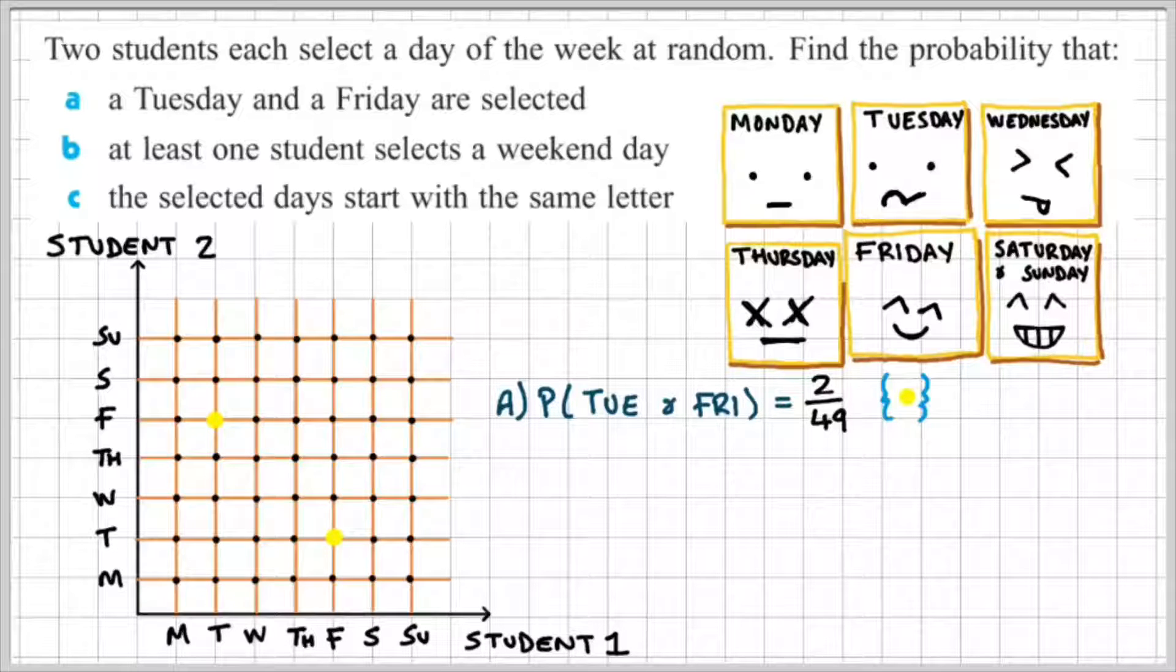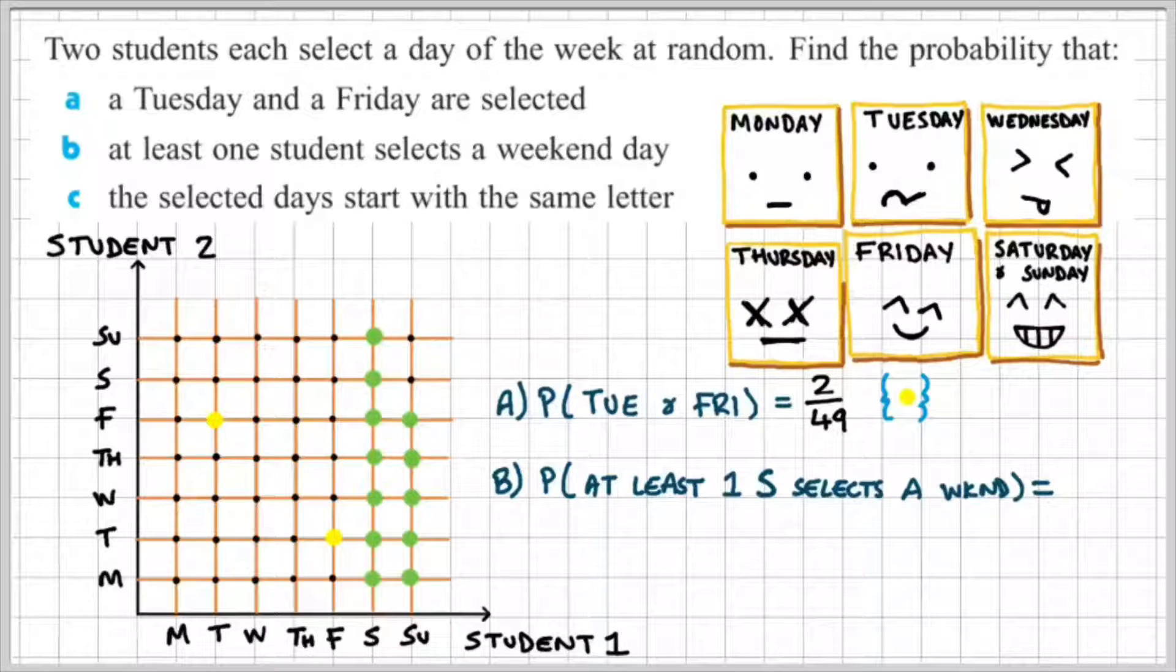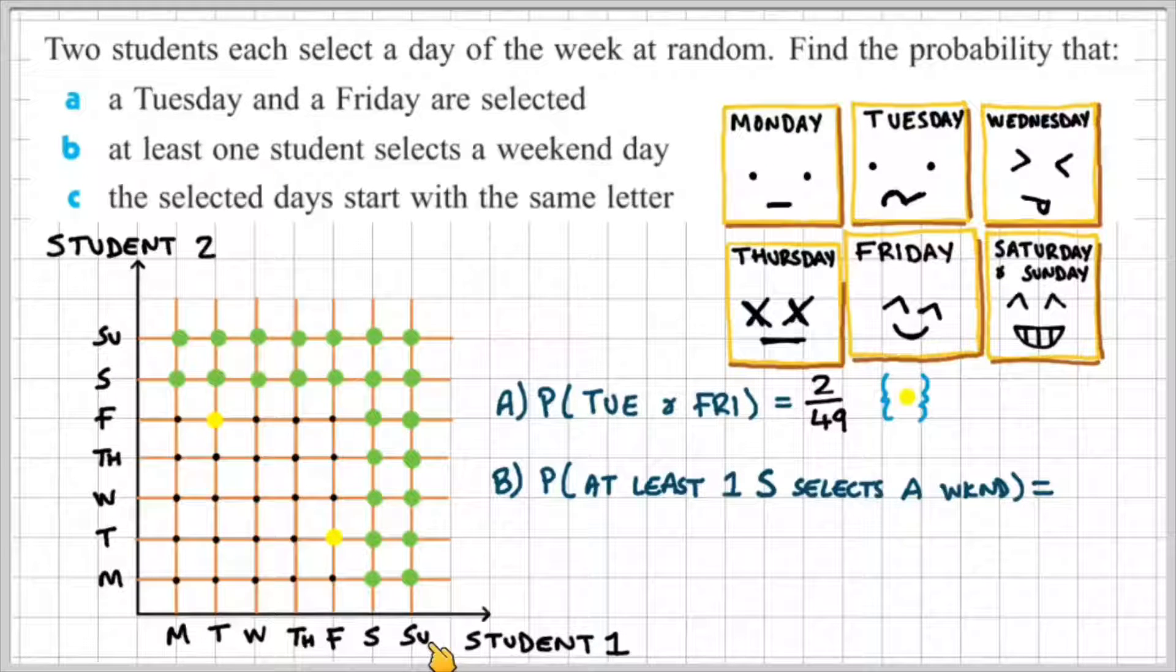Okay, let's move on to Part B, the probability of at least one student selecting a weekend. Okay, so there's quite a few options here. Student 1 could select either a Saturday or a Sunday, and Student 2 could either select a Saturday or a Sunday.